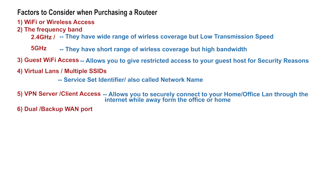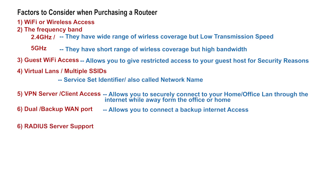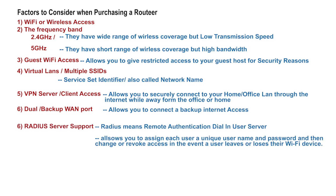Sixth, dual or backup WAN port. Consider if the router can give you another internet connection for backup or load balancing. Some routers support connecting two cables or DSL lines from different service providers. Seventh, check if the router supports RADIUS service. RADIUS means Remote Authentication Dial-In User Service. This allows for independent authentication so that you can assign each user a unique username and password, and then change or revoke access if a user leaves or loses their Wi-Fi device.